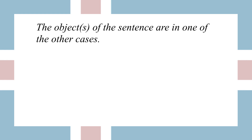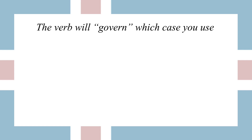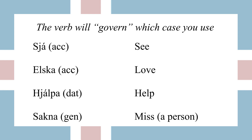The objects of any sentence are going to be in one of the other cases. The question is, which one? Either the verb will tell you or the preposition will tell you. When you look the verb up in the dictionary, it will tell you which case its object should be in — and the same with the preposition. We describe that as the verb governing a certain case, or the preposition governing a certain case.